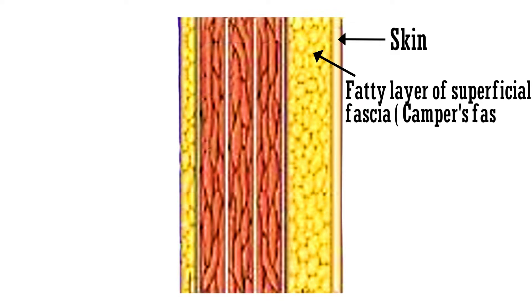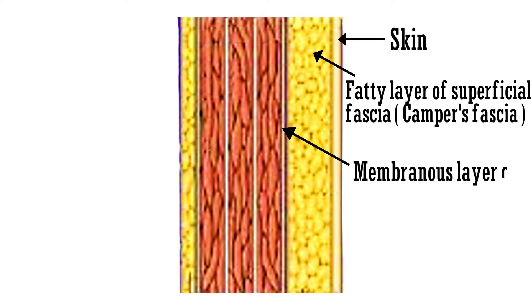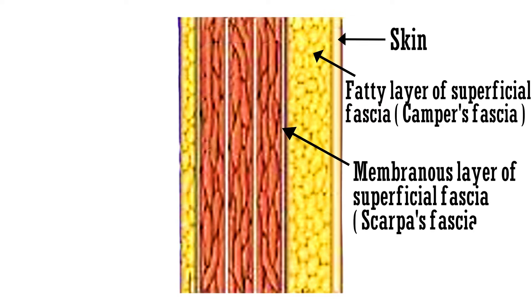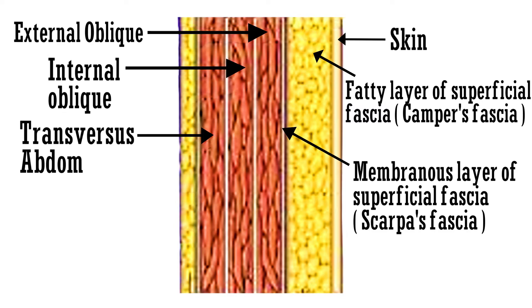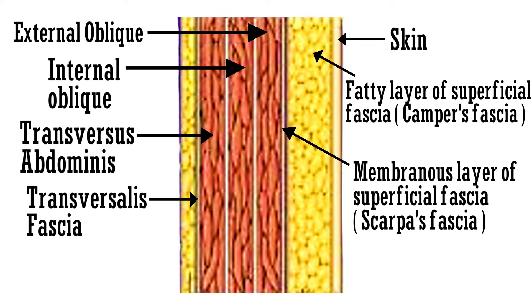Starting with the outermost layer, that is the skin. The second layer below the skin is the fatty layer of superficial fascia, also called Camper's fascia. The third layer is the membranous layer of superficial fascia, also called Scarpa's fascia. The fourth, fifth, and sixth layers consist of the external oblique, internal oblique, and the transversus abdominis muscle. The seventh layer consists of the transversalis fascia, and the eighth layer consists of the extraperitoneal tissue.